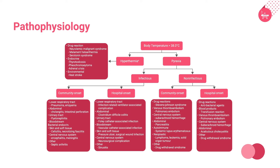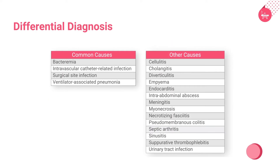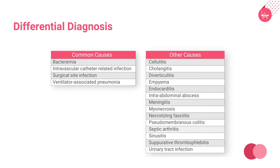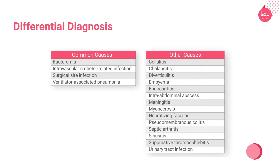The differential diagnosis of fever in an ICU patient will be covered next. The table represents the most common causes along with other causes of fever in an ICU patient. The sources of fever may be infectious or non-infectious, and their relative frequency varies according to the population studied and the specific definition of infection used.